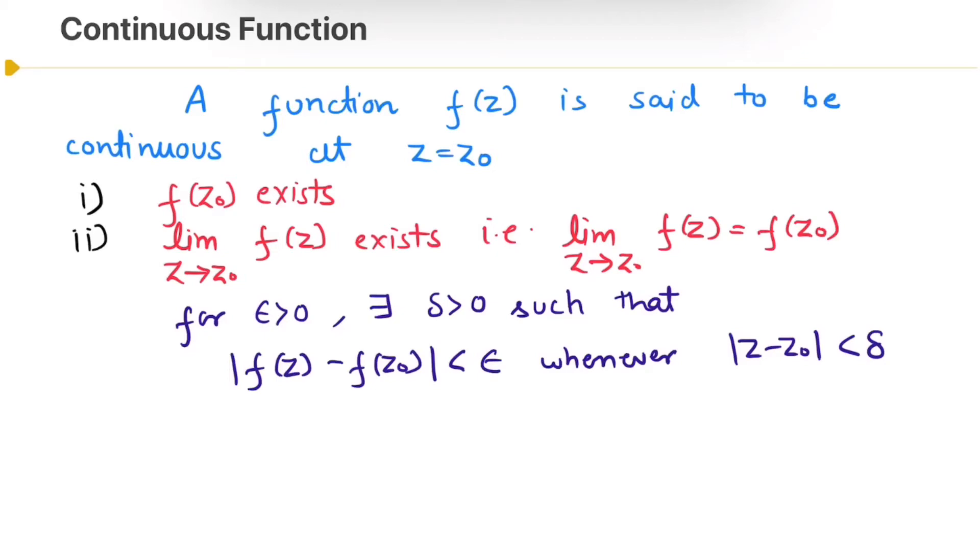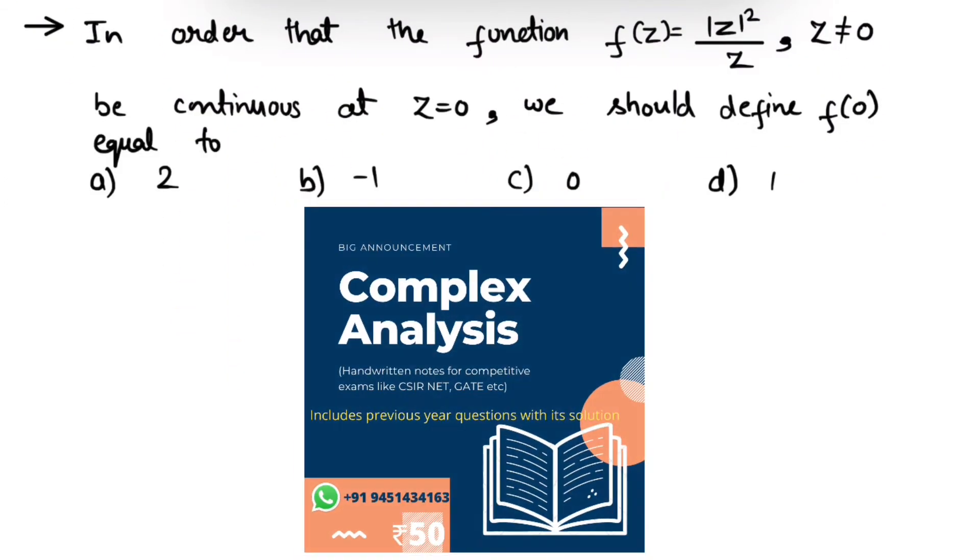Now let's do a problem on this concept. In this question we have to find for what value of f(0) function f(z) = |z|²/z is continuous at z = 0.